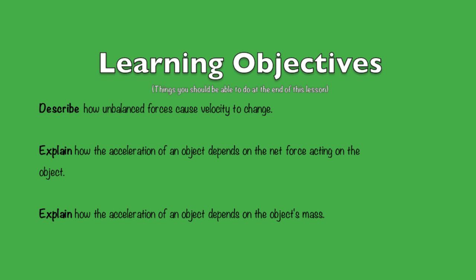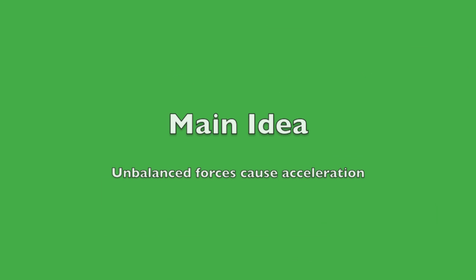The learning objectives — things you should be able to do at the end of this lesson — are as follows: you should be able to describe how unbalanced forces cause velocity to change, explain how the acceleration of an object depends on the net force acting on the object, and explain how the acceleration of an object depends on the object's mass. The main idea of this lesson is that unbalanced forces cause accelerations.